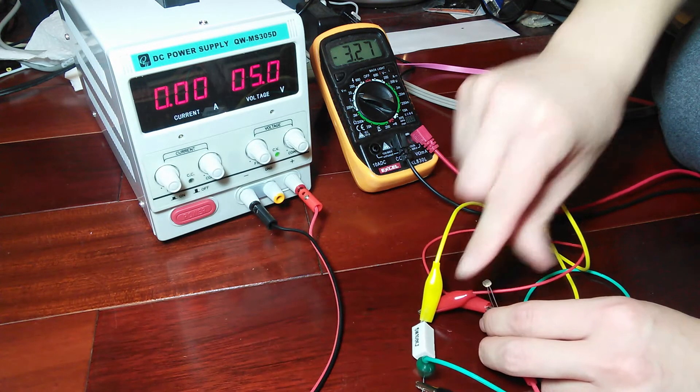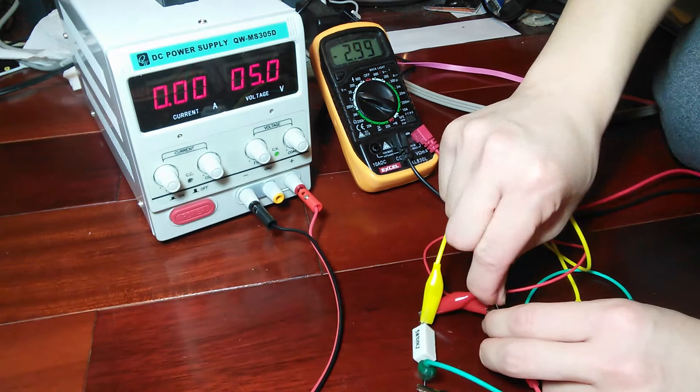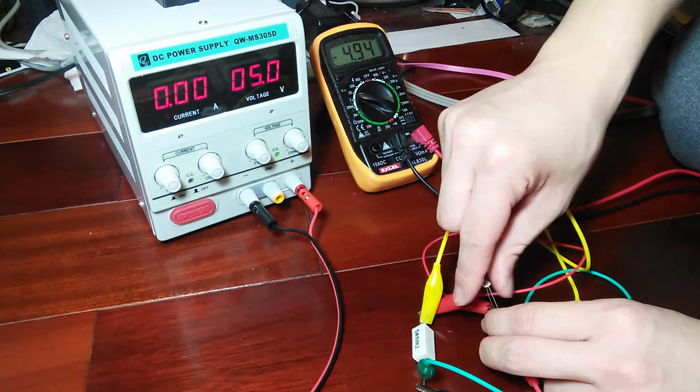So, if I change the resistance of one resistor, the ratio changes. And then, the other ratio has to change as well.